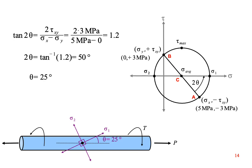In our example problem, the combination of tension and torsion results in a maximum normal stress of 6.4 megapascals, oriented 25 degrees from the axis of the rod. The minimum normal stress is a compressive stress of 1.4 megapascals, acting at 115 degrees from the axis of the rod.